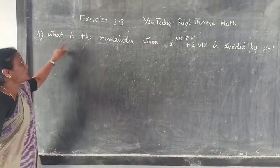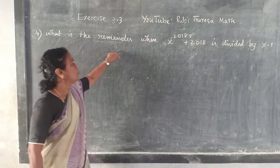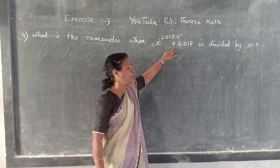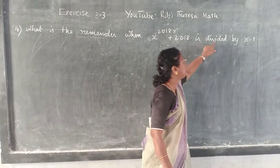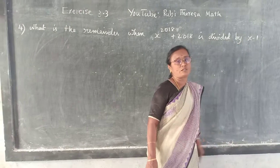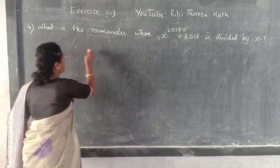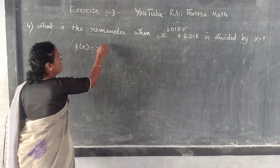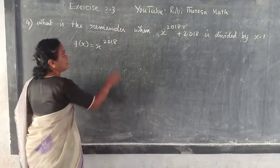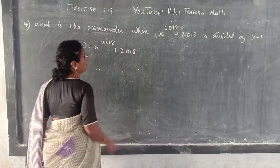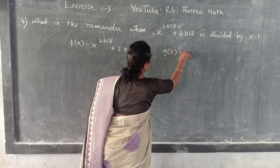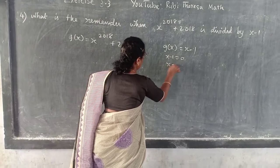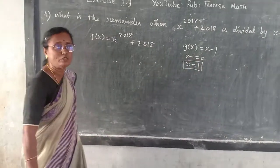Good morning. What is the remainder when x to the power of 2018 plus 2018 is divided by x minus 1? Let f(x) equal x to the power of 2018 plus 2018, and g(x) equal x minus 1. That means x minus 1 equal to 0, so x is equal to 1.